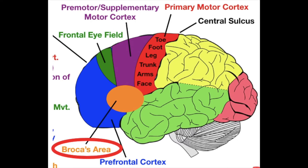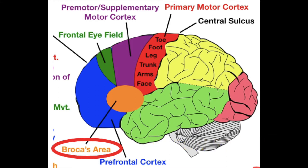And finally, there is Broca's area, which mainly deals with speech production. Always remember, it is only in the dominant hemisphere — typically on the left — in 90% of right-handed people.